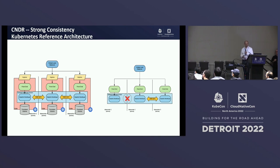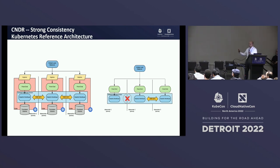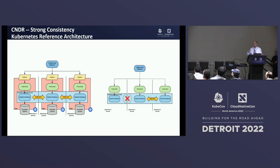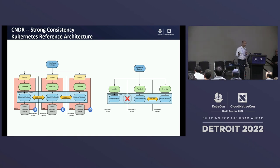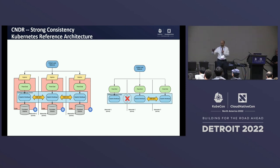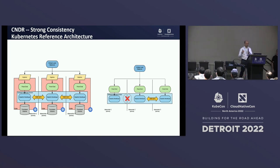Here's an example reference architecture for deploying a strongly consistent workload on Kubernetes. Per the CAP theorem we need three availability zones to have strong consistency, and we select a workload that has chosen to be consistent — because you have two choices: consistent or available during a network partition. With three failure domains, when one region goes down the global load balancer detects that, reroutes traffic to the healthy availability zones or regions, and the workload automatically readjusts to the situation.